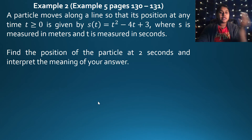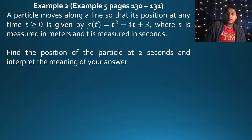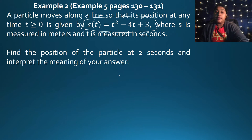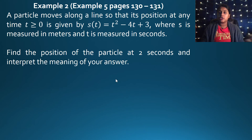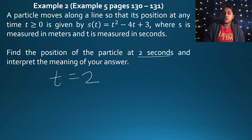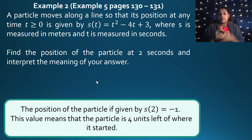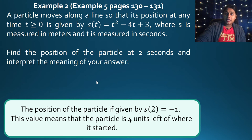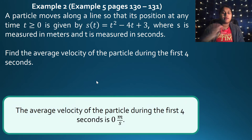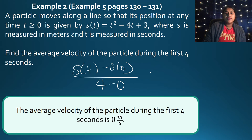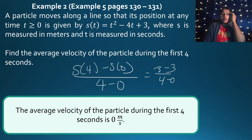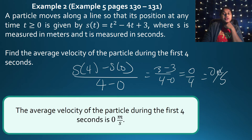In a second example, we're given a position function and asked to find the position at T equals 2. Plugging in S of 2, we get negative 1 — meaning the particle is one unit left of where it started. For average velocity over an interval, we use S of 4 minus S of 0 all over 4 minus 0, which gives 0 meters per second.